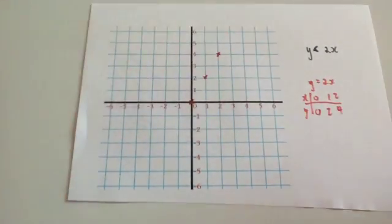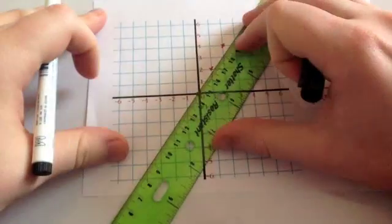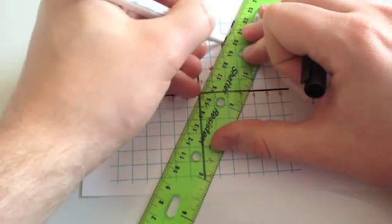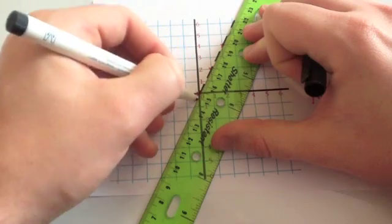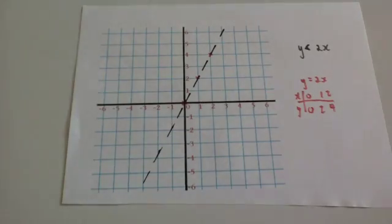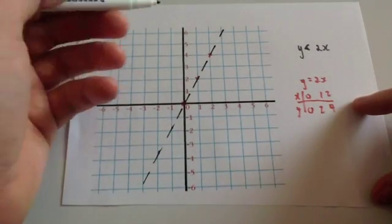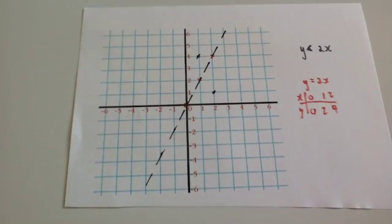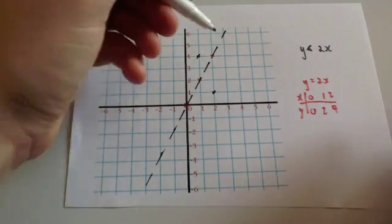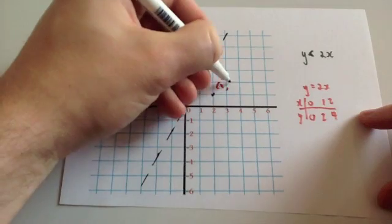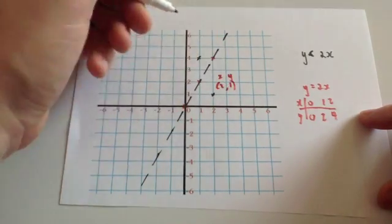Now because this is just a less than symbol, it's going to be a broken line. So use your ruler and draw a broken line through these coordinates. Now we just need to decide which side we're going to shade. Let's choose two coordinates not on the line. I tend to stay in the first quadrant — it makes the numbers a bit easier to work with. So let's choose coordinate (2,1), where x is 2 and y is 1.